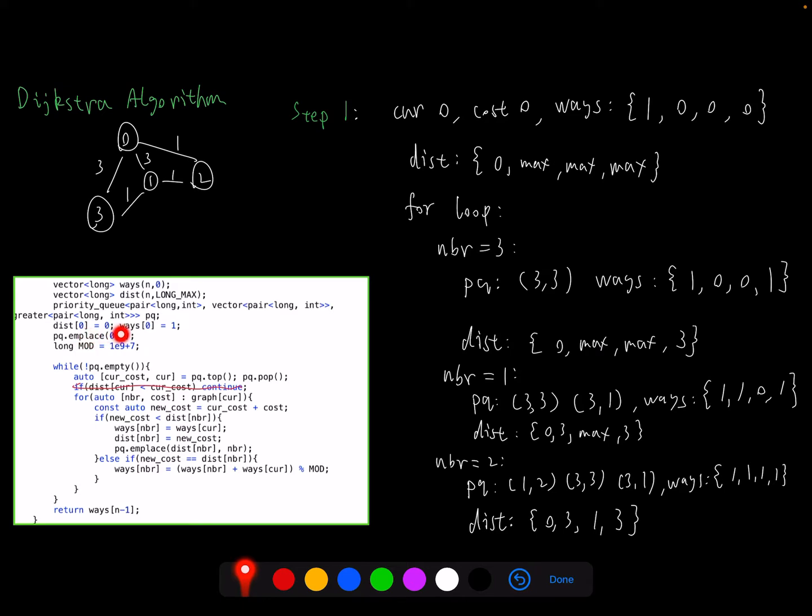In addition, we have a priority queue here based on pairs with cost and the current node, then sorted by the cost with the smaller one at the top. Then we initialize the initial node. We have one way to reach zero and the cost will be zero. Then we put the initial node in the priority queue, then conduct a while loop. So here it's pretty similar to breadth-first search. We get the top element, then we travel its neighbors to see whether we want to put the neighbors in the priority queue. Here we have two if conditions. If we meet the first one, we will put its neighbors and cost into the priority queue. For the second one, we only update the ways. After finishing all the priority queue, we return the last element in the ways.